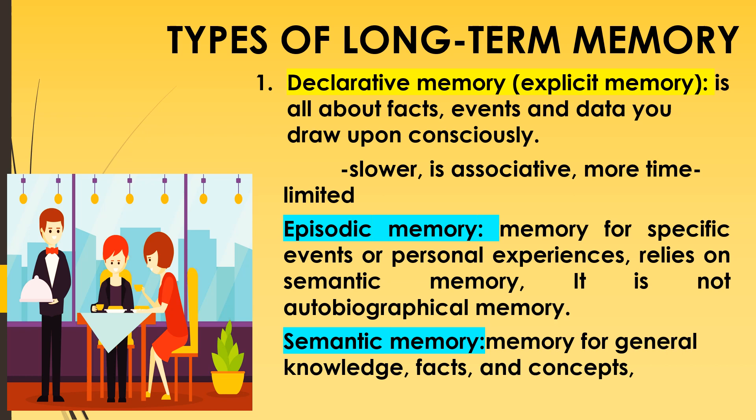The two types of declarative memory are episodic memory and semantic memory. Episodic memory is the memory for specific events or personal experiences — for example, your high school graduation. It is related to periods of time and is unique and personal to you. It is also known as autobiographical memory, since someone else's recollection of the same event or experience would be different from yours. Autobiographical memory is more general — for example, recalling the street name of a house you grew up in.